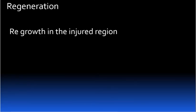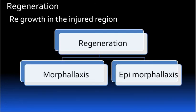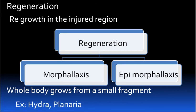Next is regeneration. Regeneration means regrowth in the injured region. Regeneration has two types: one is Morphallaxis and the other is Epimorphosis. Morphallaxis means the whole body grows from a small fragment. Examples for Morphallaxis are Hydra and Planaria.